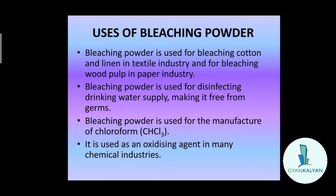Bleaching powder is soluble in cold water and gives a strong smell of chlorine. Now let us see some uses of bleaching powder. It is used for bleaching cotton and linen in the textile industry, and also for bleaching washed clothes in laundries. Bleaching powder is used for disinfecting drinking water supply, making it free from germs. Water is disinfected by addition of bleaching powder. It is used for the manufacture of chloroform, and also as an oxidizing agent in many chemical industries.